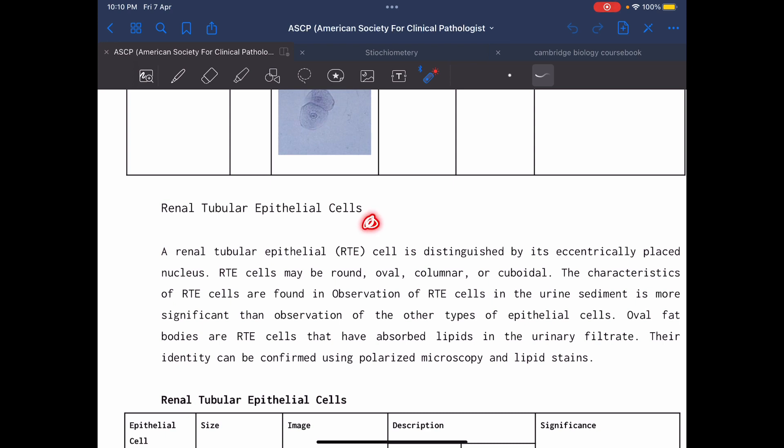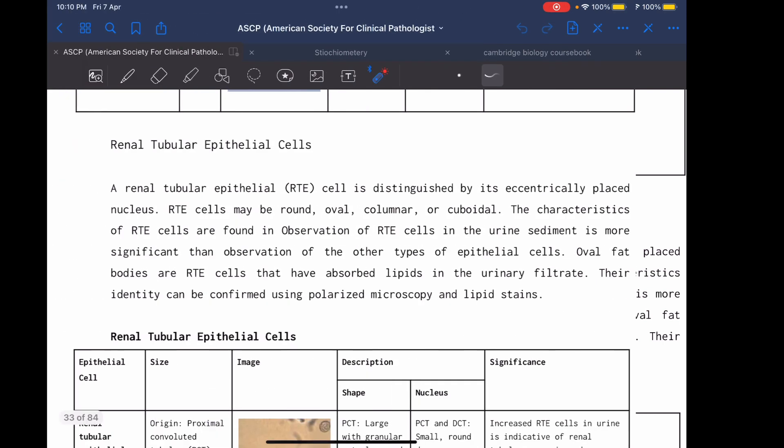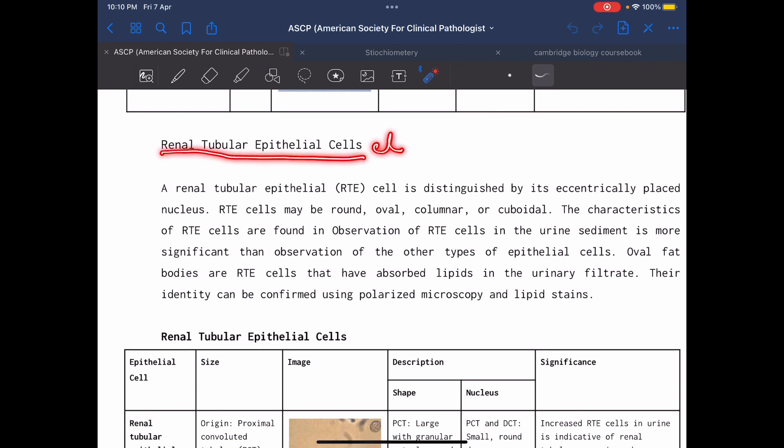Renal tubular epithelial cells are distinguished by eccentrically placed nucleus. The nucleus is not in the center. The cell may be round, oval, columnar, or cuboidal. The presence of renal tubular epithelial cells is clinically significant. They may absorb fats or lipids and be converted into oval fat bodies. Oval fat bodies are renal tubular epithelial cells that absorbed lipids in the urinary filtrate. The identification of oval fat bodies can be confirmed by polarized microscopy and lipid stain.